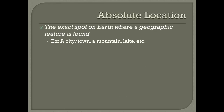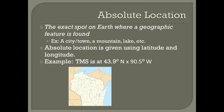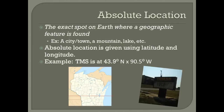Absolute location is the exact spot on Earth where a geographic feature is found. This could be a city, a town, a mountain, lake, or perhaps even a building. Absolute location is given using latitude and longitude. This is the most precise way to find a location. An example of absolute location is Tomah Middle School is at 43.9 degrees north latitude by 90.5 degrees west longitude. Using these coordinates, we should be able to find Tomah Middle School.